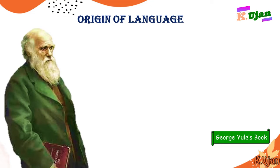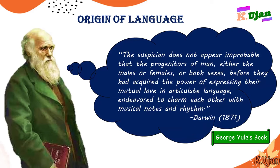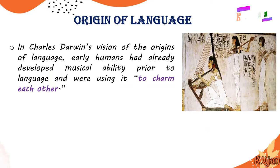In George Yule's book, Darwin's words are quoted: 'The suspicion does not appear improbable that the progenitors of man, either the males or females or both sexes, before they had acquired the power of expressing their mutual love in articulate language, endeavored to charm each other with musical notes and rhythm.' So the very first human beings, to charm each other, made musical notes or rhythm, and that was the beginning of language according to Darwin.